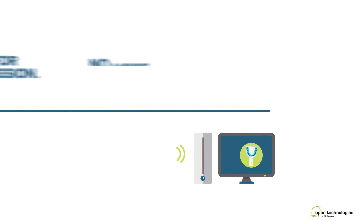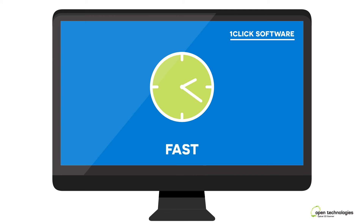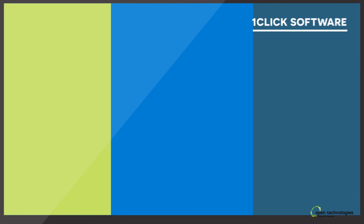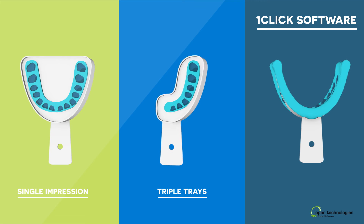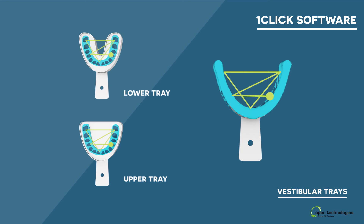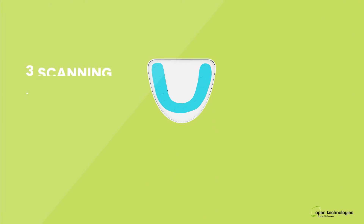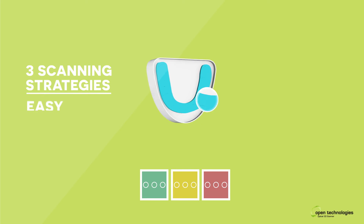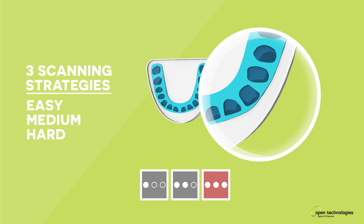No more waiting to send the impression, no more waiting for the partner to receive it. One Click software is intuitive, fast, and easy, and will accompany you patient after patient. With One Click you can scan single impression, triple tray, and upper/lower and vestibular tray. Open and flexible, One Click also lets you choose the level of detail — easy, medium, or hard — to deliver the best performance on all kinds of impressions.